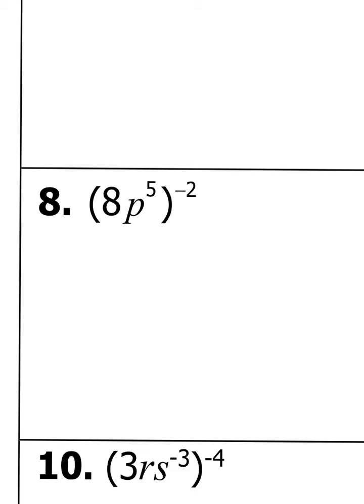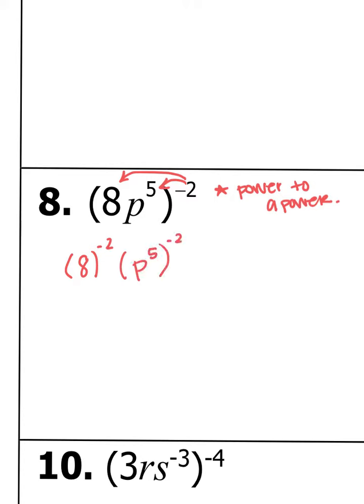For number 8, we have 8p to the fifth power, all to the negative second power. This is an example of power to a power, so we're no longer multiplying — we have a power raised to another power. We have to take this power to both things. We're going to do 8 to the negative second power. In a calculator, type parenthesis 8, close your parenthesis, then caret button negative 2. Hit math, enter, enter and you should get 1 over 64.